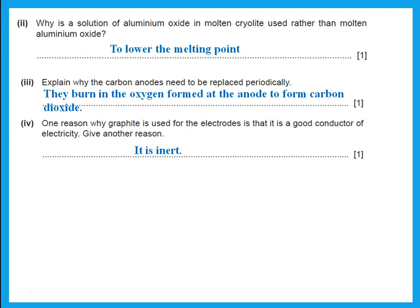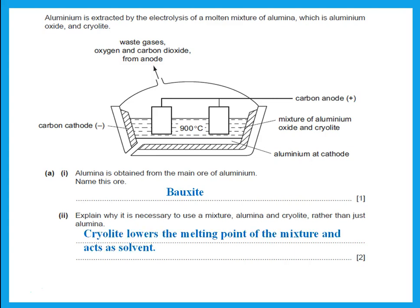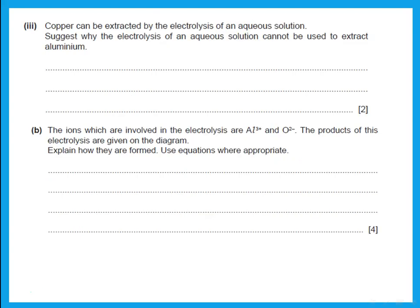Aluminium is extracted by electrolysis. Name its ore — bauxite. Explain why it is necessary to use a mixture of alumina and cryolite rather than just alumina. We add cryolite because it lowers the melting point of the mixture. For two marks, you also need to mention that it acts as a solvent.